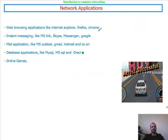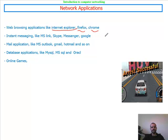The applications that use the network include web browsing applications like Internet Explorer, Firefox, Chrome, and many others. We have instant messaging like Microsoft Lync, Skype, Messenger, and Google — all applications used for video and text messages, SMS, and so on. We also have mail applications like Microsoft Outlook, which is a mail client that talks to a mail server to send and receive emails, and we have Gmail, Hotmail, and so on.